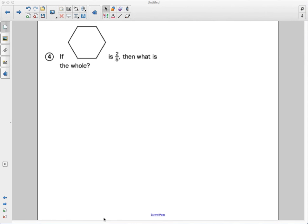All right, welcome back mathematicians. Today we've been further exploring fractions together, and we're going to look at fraction of whole type problems. Here in this question it says: If the hexagon is 2/5, then what is the whole?